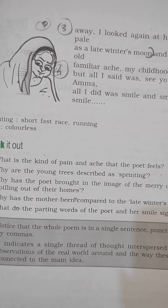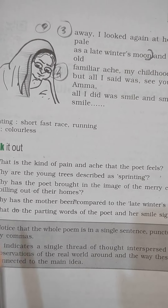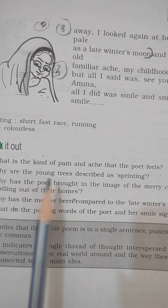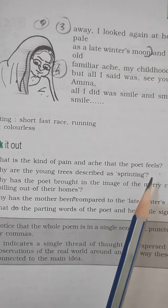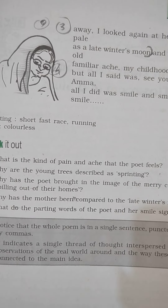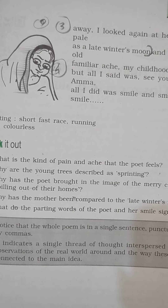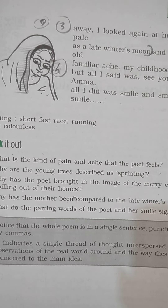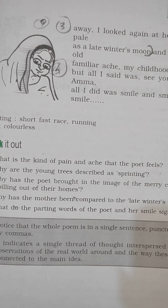Question number one: What is the kind of pain and ache that the poet feels? Answer: The poet is pained to see her mother's dull and colorless face. She is hurt to see that her mother's face looks like that of a dead body. She is afraid of the fact that she may not see her mother alive next time.